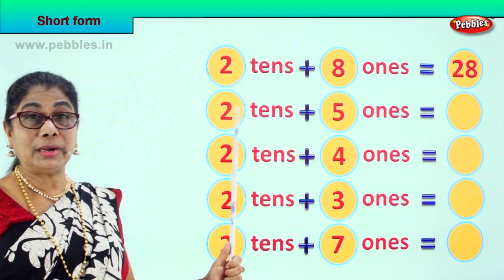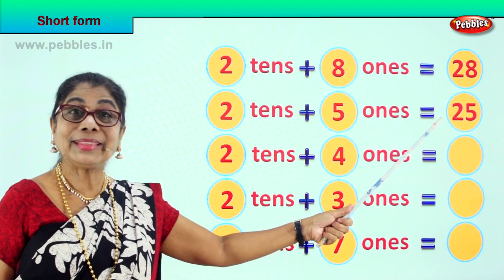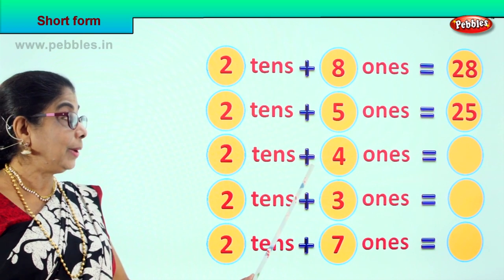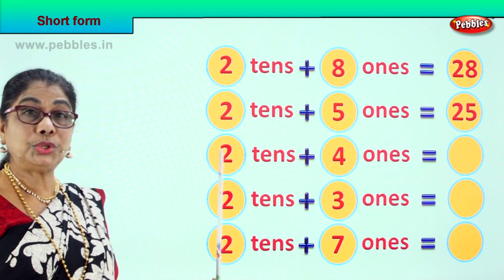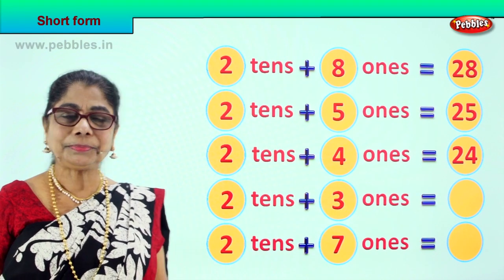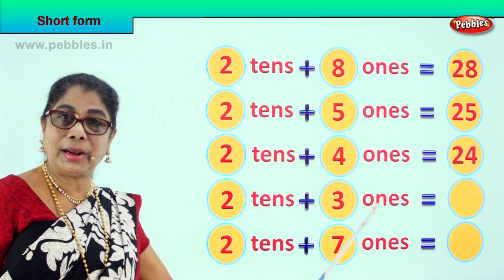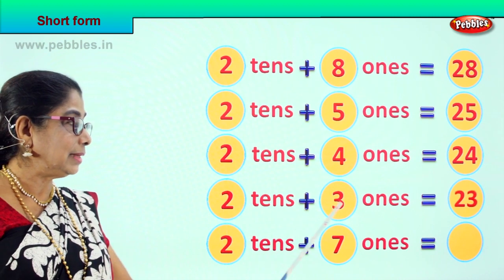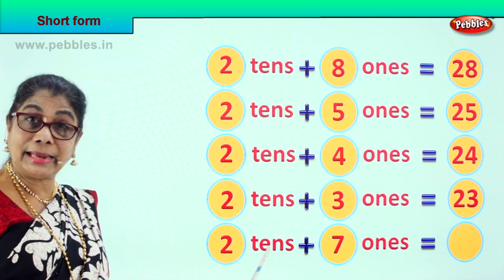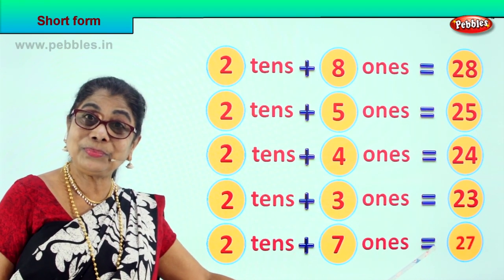Next, two tens plus five ones — that is twenty plus five, equals 25. Two tens plus four ones equals 24. Let's go on — two tens plus three ones — twenty plus three — equals 23. Next, two tens plus seven ones — that is twenty plus seven — equals 27.